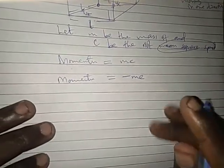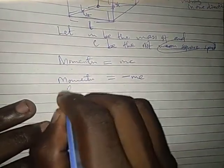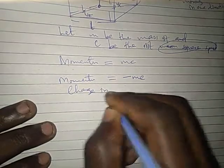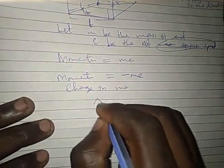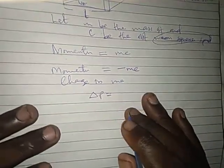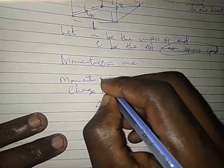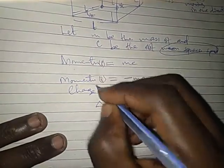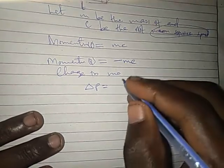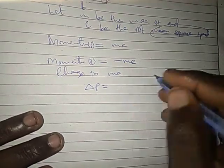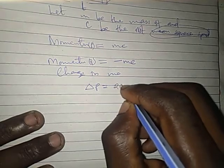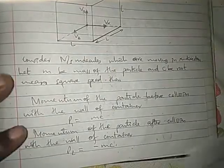Now, change in momentum. Change in momentum. Momentum is written with the letter P. This is momentum before collision minus momentum after collision. Change in P equals MC minus negative MC, which gives us 2MC. That is change in momentum.